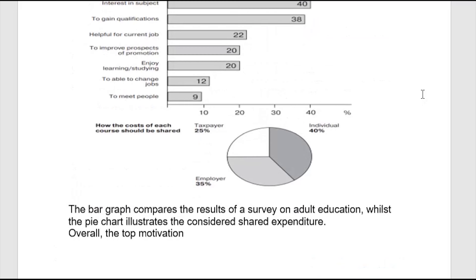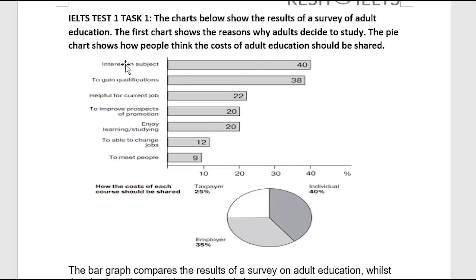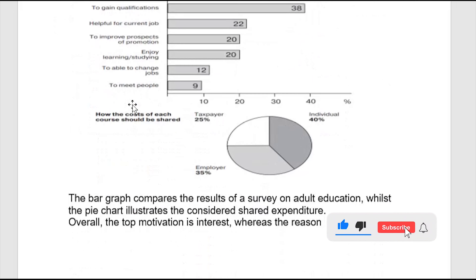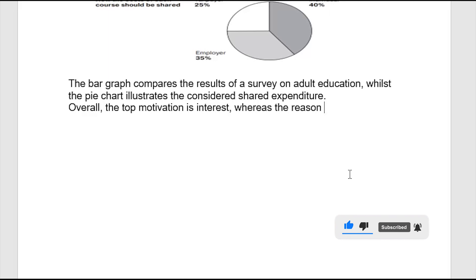Now I'm going to move to the overall section where I'll just give an overall view. Overall, the top motivation is interest in subjects — people are interested in the subject. The top motivation is interest, whereas the lowest reason is to meet people. To meet people is the lowest motivation.